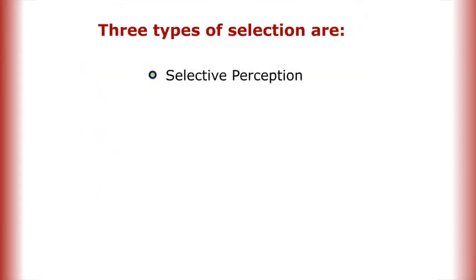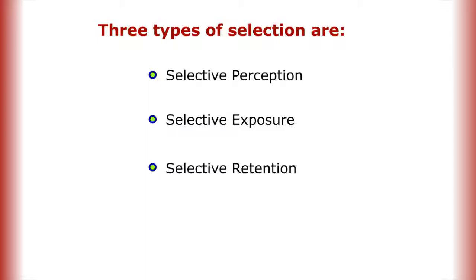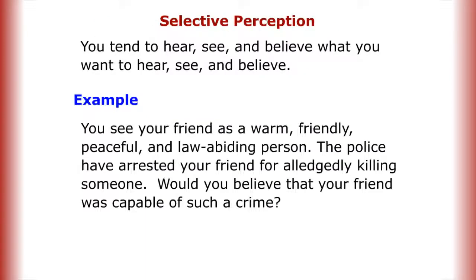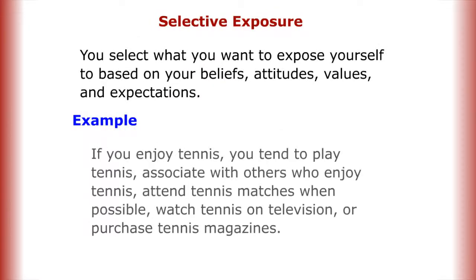Three types of selection are selective perception, selective exposure, and selective retention. Selective perception means you tend to hear, see, and believe what you want to hear, see, and believe. For example, you see your friend as a warm, friendly, peaceful, and law-abiding person — but the police have arrested your friend for allegedly killing someone. Would you believe your friend was capable of such a crime?